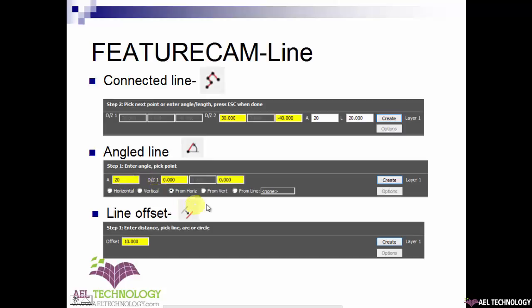You can also define the angle from a line — you click here and select the line. After setting what type of angle line you require, you just need to define a point where you can place the angle line. Next is line offset, which is a favorite method. Generally, while designing a part, you create vertical and horizontal lines from the center, then offset them to create the final model. This is a general practice throughout the CAD industry: first define the x, y, or z axis, then create vertical and horizontal lines, offset them to whatever shape is required, and trim.